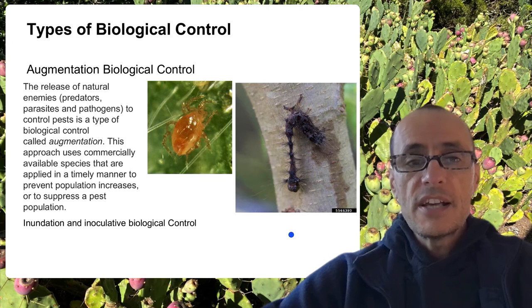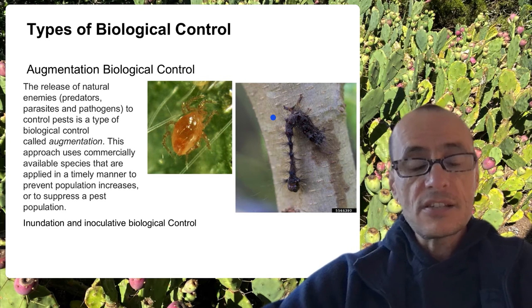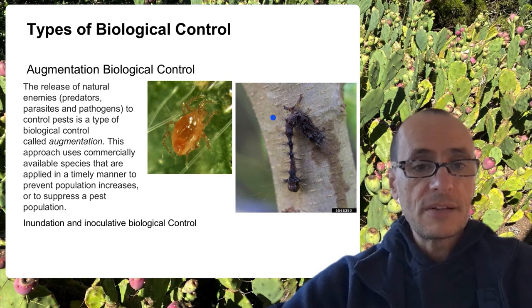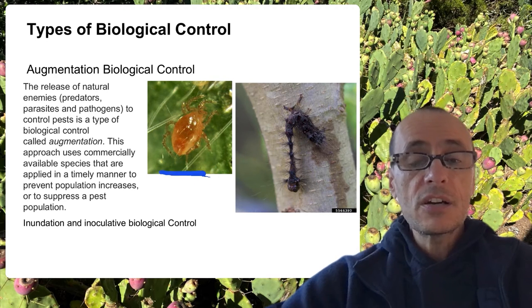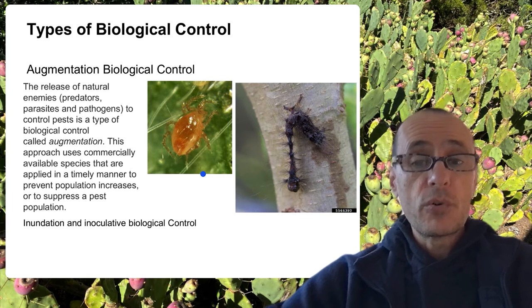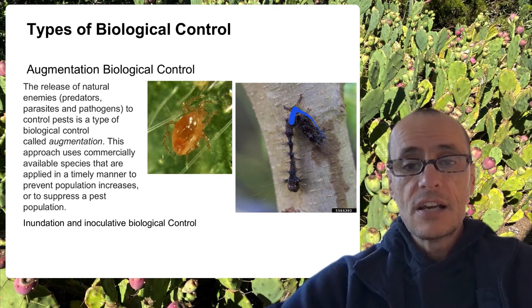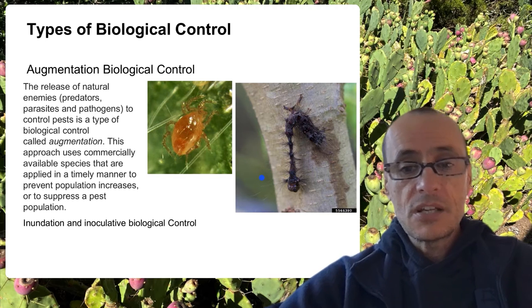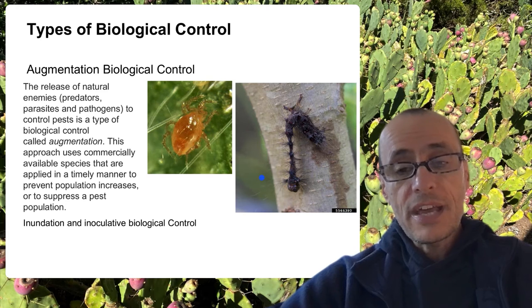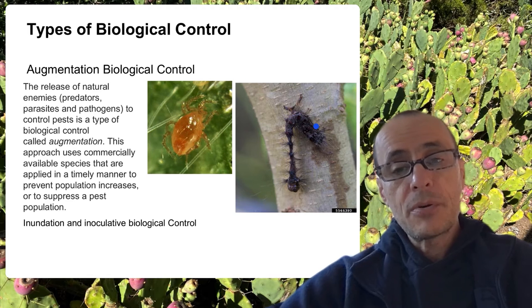Augmentation biological control is basically where organisms that are predators or pathogens are reared in large quantities and then released into an environment where the pest is currently present. A well-studied example is predatory mites released in greenhouse situations for the control of other mites or soft-bodied insects. This is a gypsy moth caterpillar that has died in its classic stance, taken over by a nuclear polyhedrosis virus. These viruses can actually be grown in laboratory conditions, loaded into planes, and sprayed into areas where these caterpillars occur, and as the virus enters the body of the caterpillar, it basically kills it.